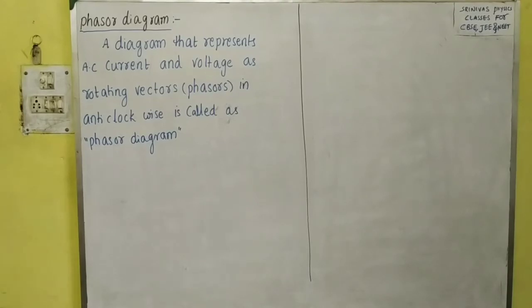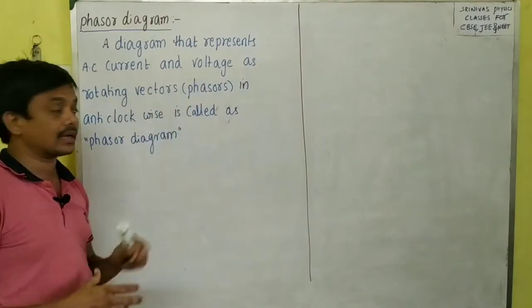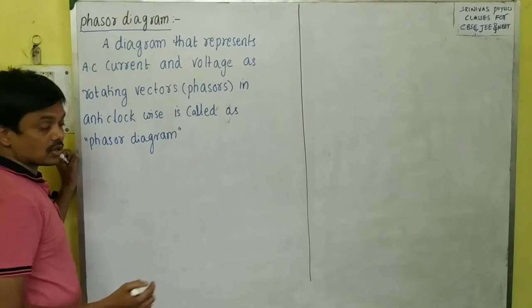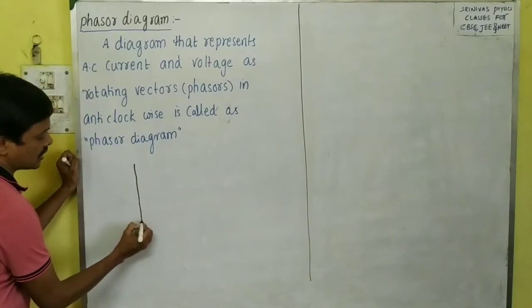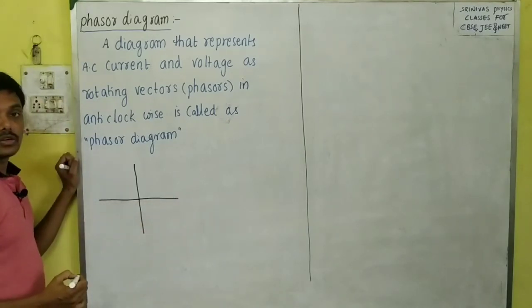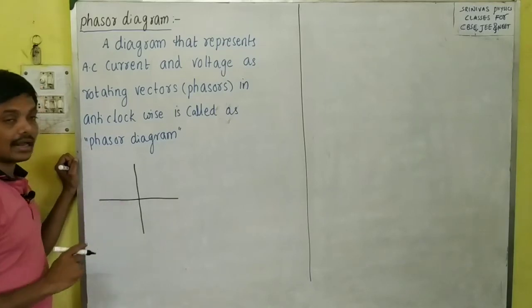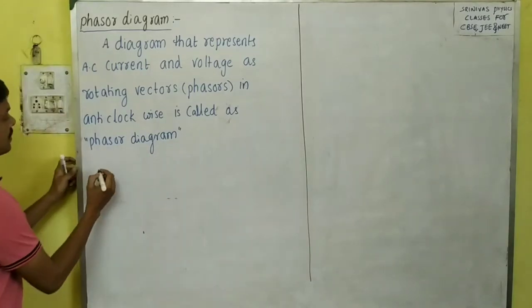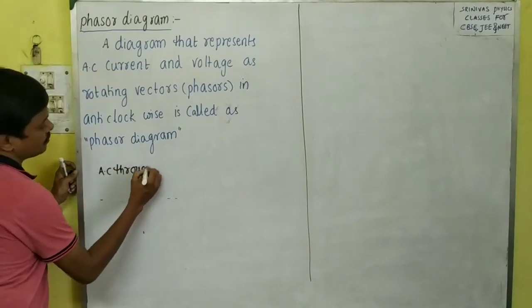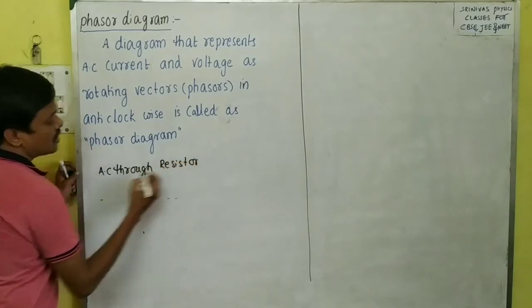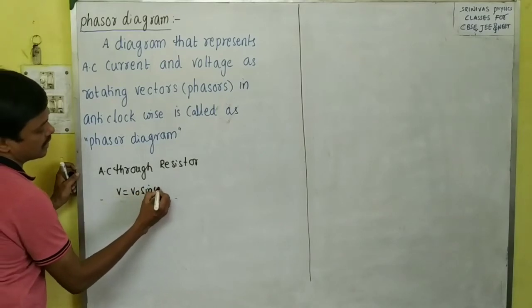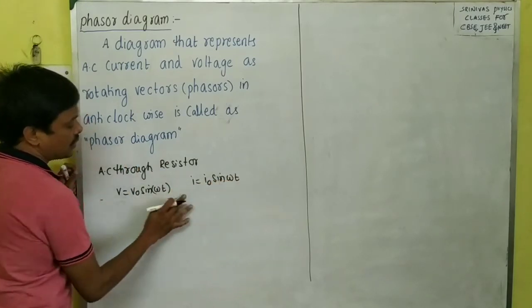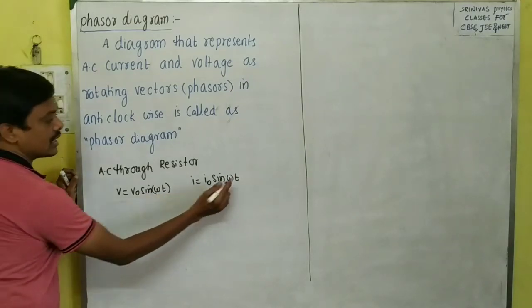Let me draw the phasor diagram for AC through a resistor. The voltage applied is V₀ sin ωt and the current through the resistor at any instant is I₀ sin ωt. We indicate them as rotating vectors. The angle of the voltage and the angle of the current are the same — both are ωt. Take x-axis and y-axis, and indicate the voltage as a rotating vector making angle ωt.